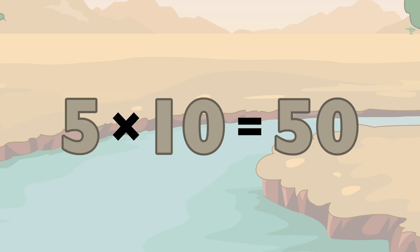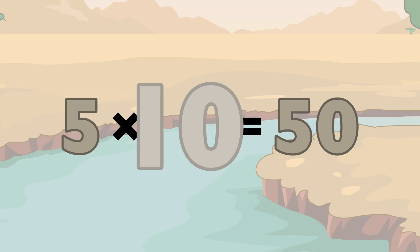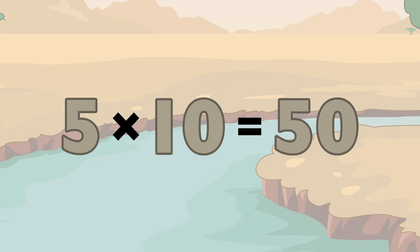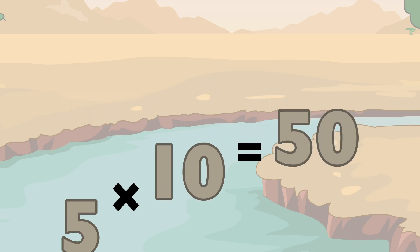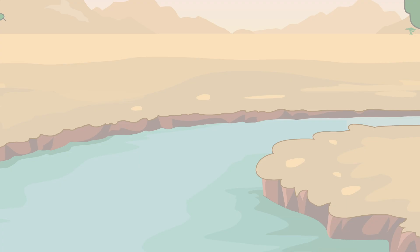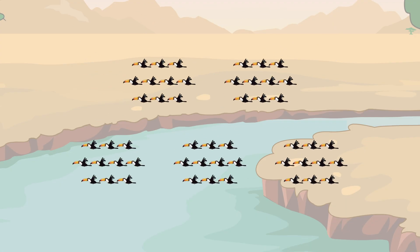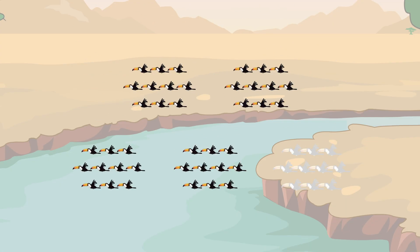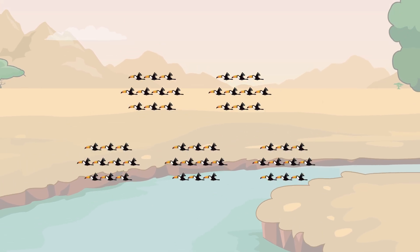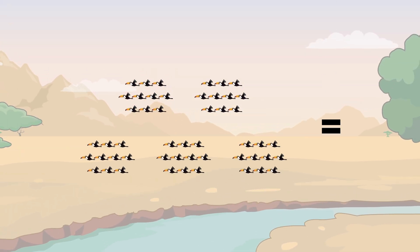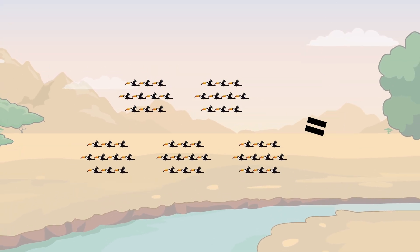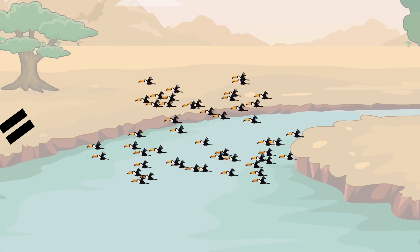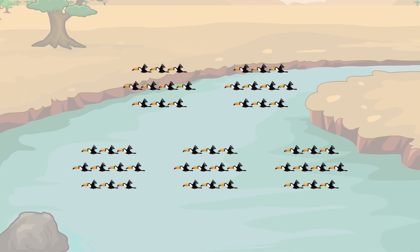Five times ten equals fifty. Ten, twenty, thirty, forty, fifty equals fifty.